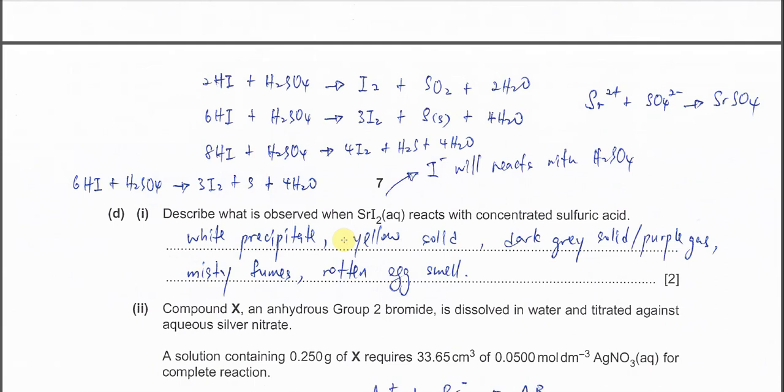Part D(i), describe what is observed when strontium iodide reacts with concentrated sulfuric acid. Strontium iodide's reaction with H2SO4 is similar to sodium iodide. First it will form HI, and the HI will further react to form multiple compounds. You can see many things.